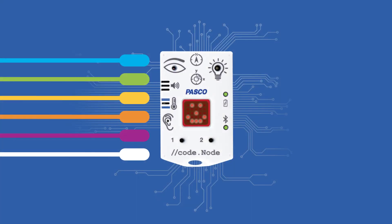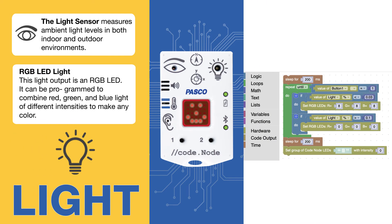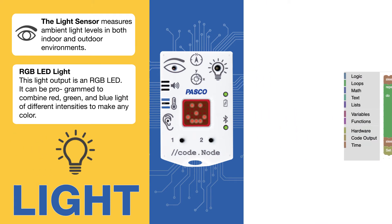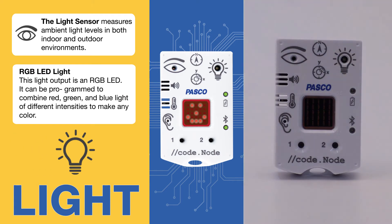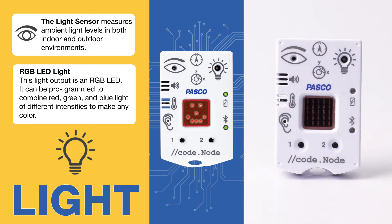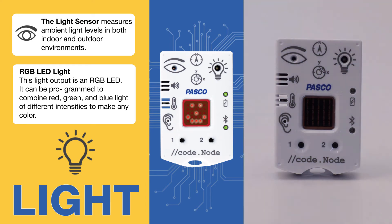Let's look at some examples. Here, the CodeNode is programmed as a nightlight. Using the light sensor as an input to measure the ambient light level, the output light is programmed to light up when the room gets dark.